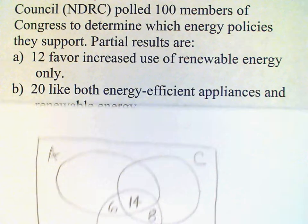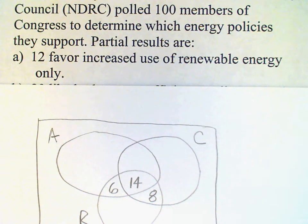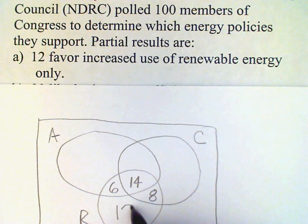And then finally we back up to the first bit of information, which says 12 favor increased use of renewable energy only. So the only means that we're not overlapped with any of the other two sets. It's just the R set here.